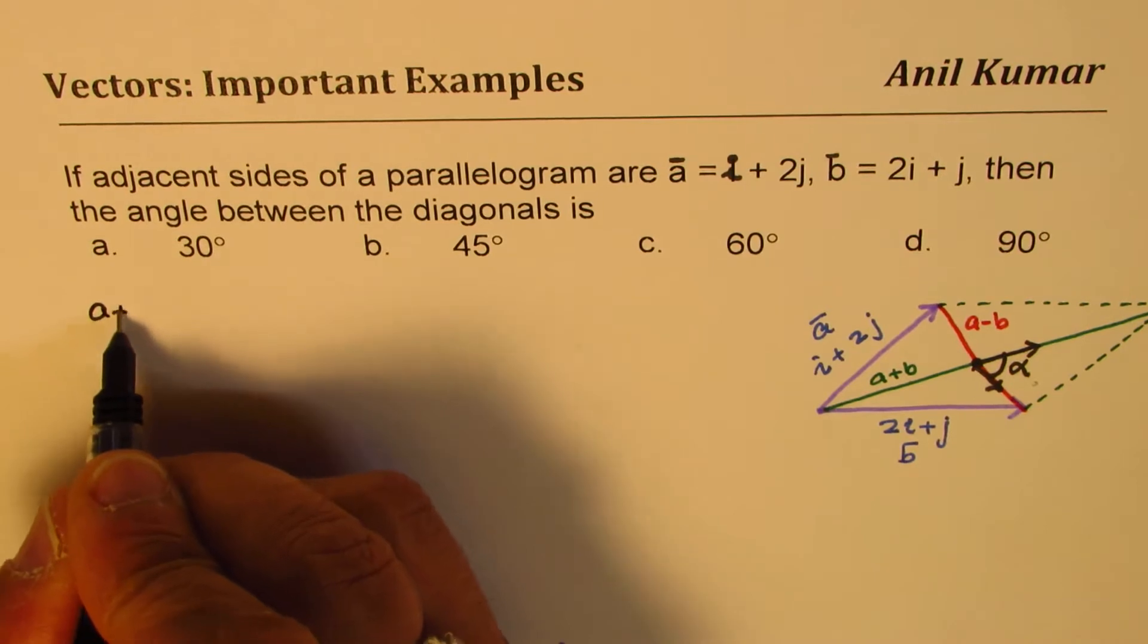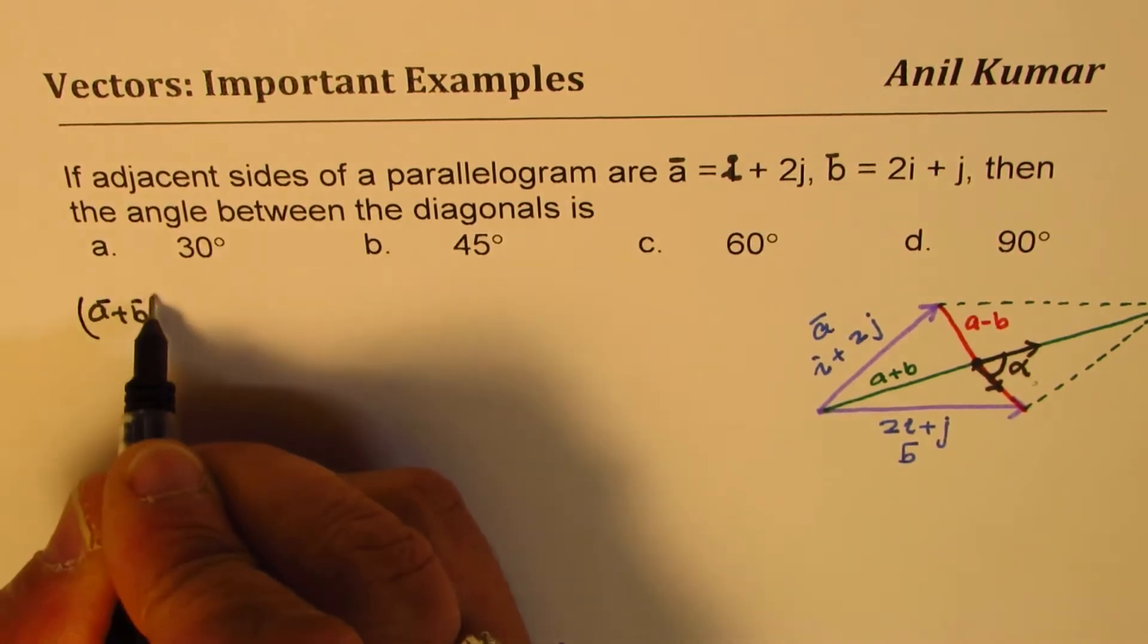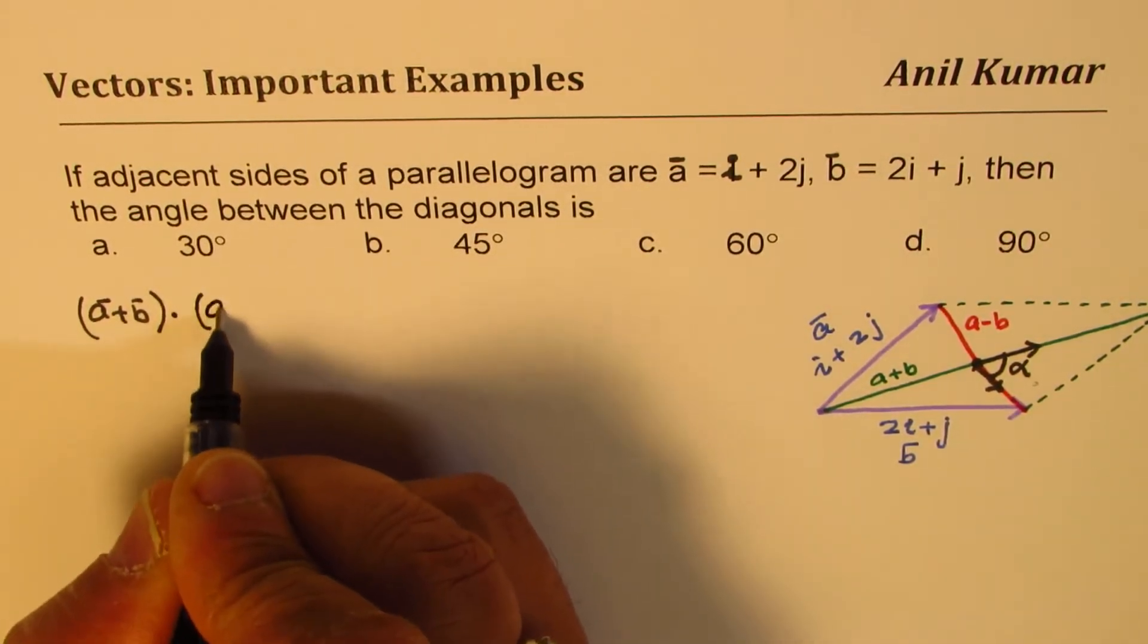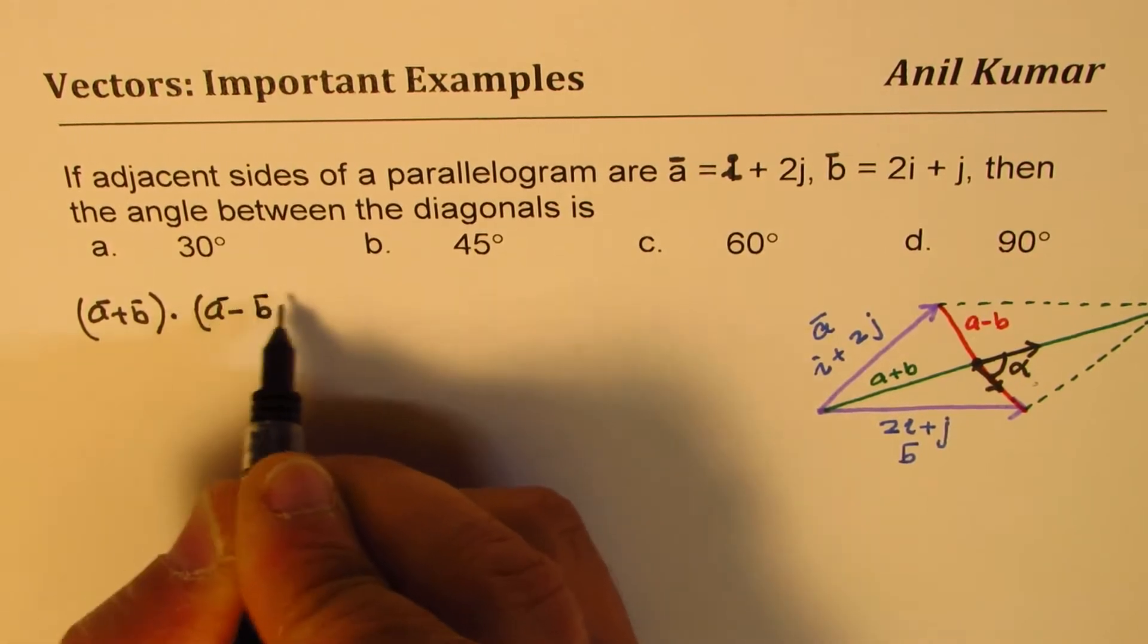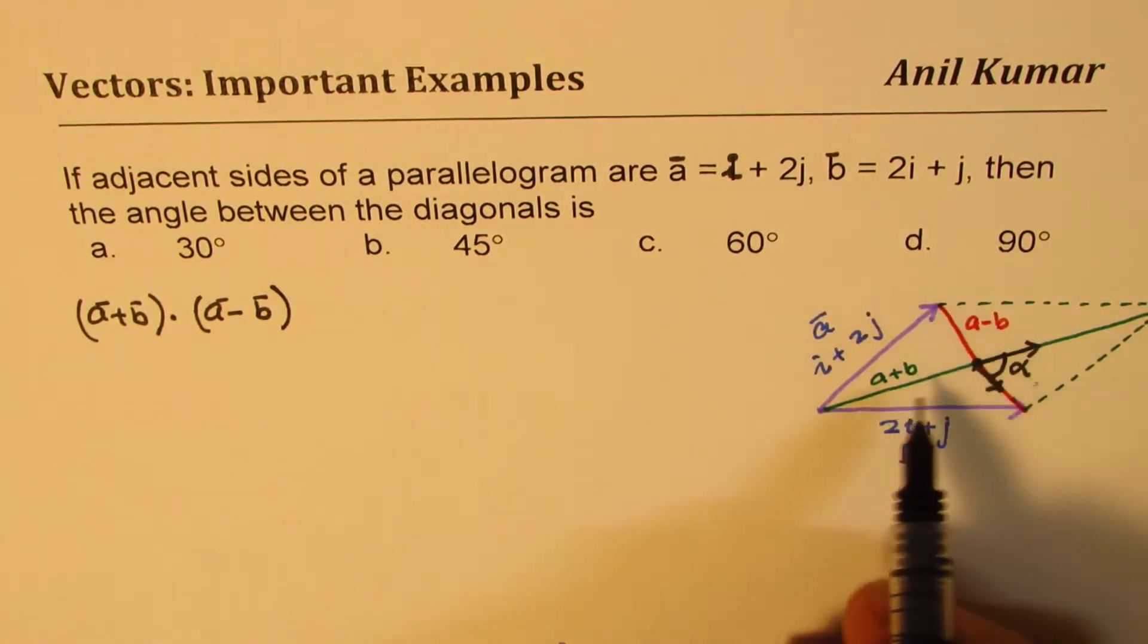So we can say that (a + b) · (a - b) is going to give us the angle alpha. That is equal to magnitude of a + b times magnitude of a - b times cos of theta. That is the dot product formula.